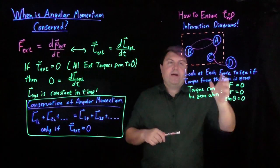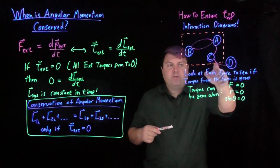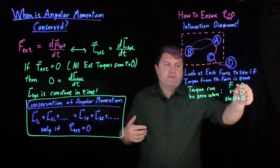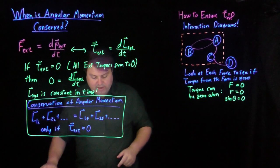Very often for us, we're going to have a single object in our interaction diagram, just because then we're only going to have one or two forces interacting with the object, and we can justify that the torque from that is zero from either R equals zero or sine theta equals zero.